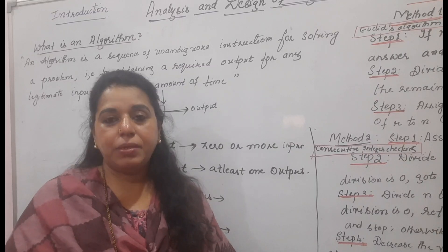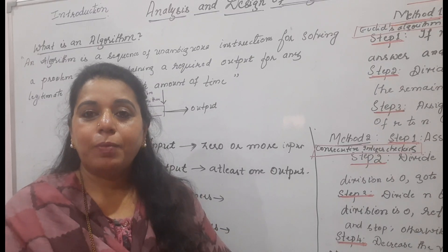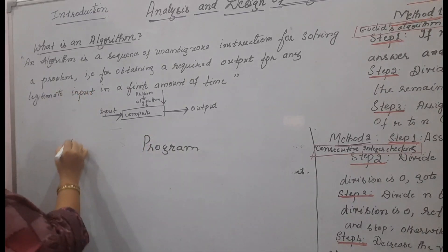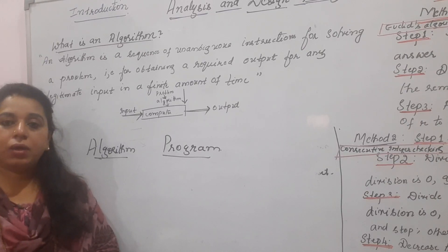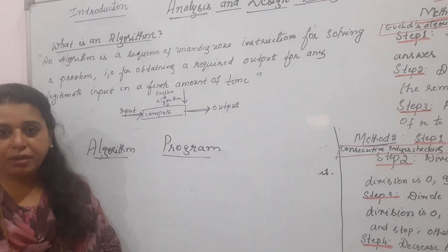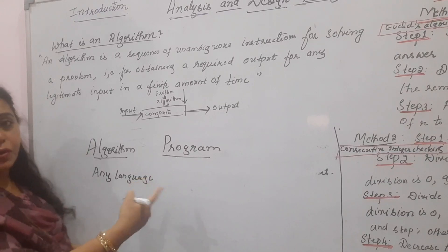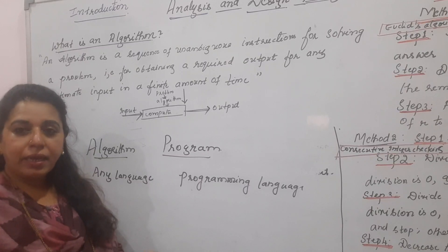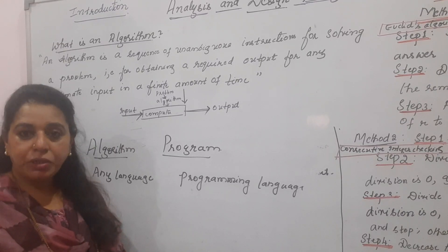When we say an algorithm is a step-by-step instruction to perform a particular task, a program is also a step-by-step instruction to perform a particular task — but what is the difference between a program and an algorithm? While writing an algorithm we are not dependent on any language; we don't have to know a specific computer programming language. You can use any language — English or mathematical notation. An algorithm can be written using any language, but to write a program you definitely require a programming language.